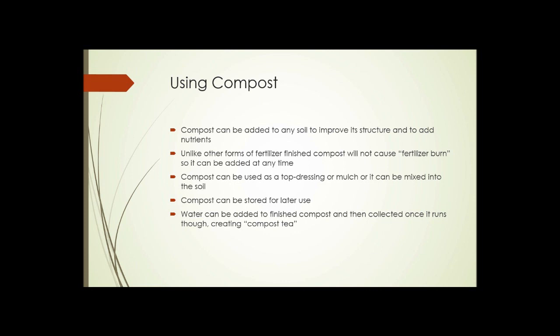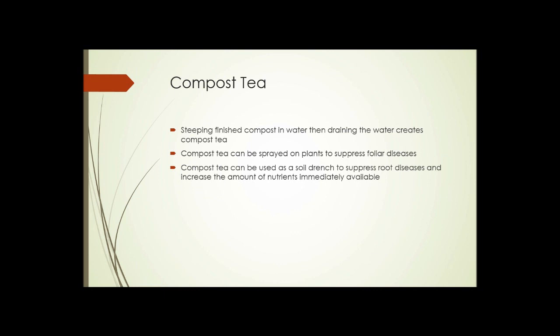Compost can be stored for long periods of time for later use. And water can be added to finished compost and collected when it runs through, creating something called compost tea. Compost tea is made by steeping finished compost in water and then draining the water. It can be sprayed on plants to suppress foliar diseases. It can actually help reduce instances of foliar fungal diseases, black spot, powdery mildew, things like that. Compost tea can be used as a soil drench to help suppress fungal root diseases and increase the amount of nutrients in the soil that are immediately available without any further breaking down. Sort of a valuable product.